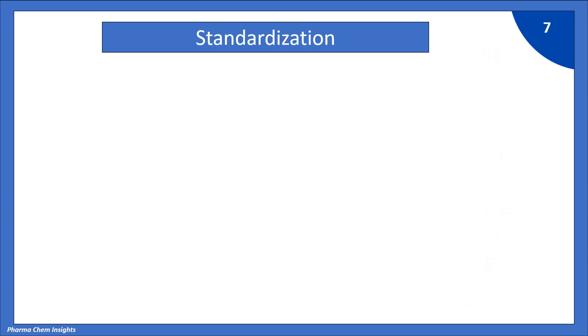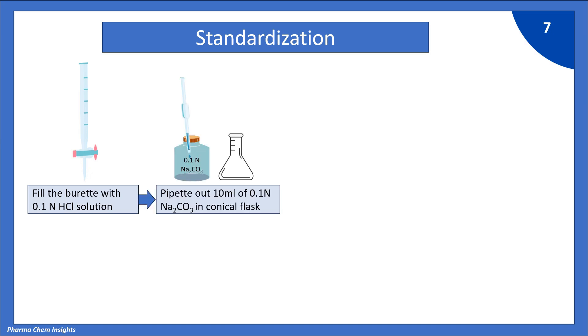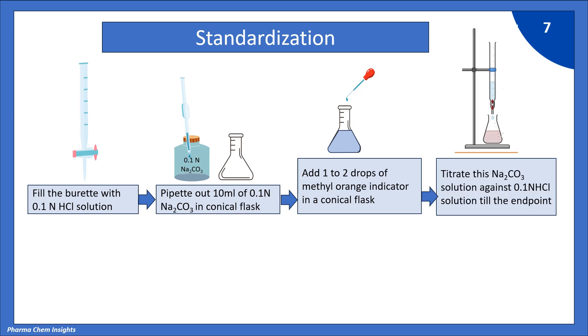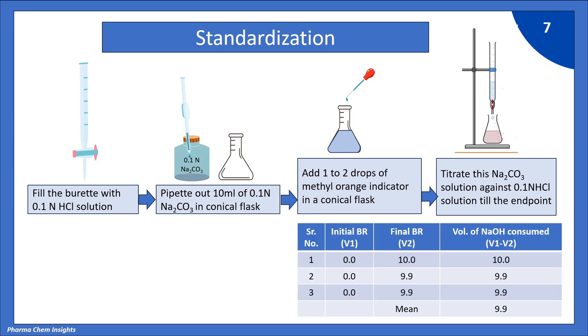Let us see the standardization schematically. First, fill the burette with 0.1 normal HCl solution. Pipette out 10 ml of 0.1 normal sodium carbonate in conical flask. Add 1 to 2 drops of methyl orange indicator. Titrate this sodium carbonate solution against 0.1 normal HCl solution till the endpoint, which is pink color.